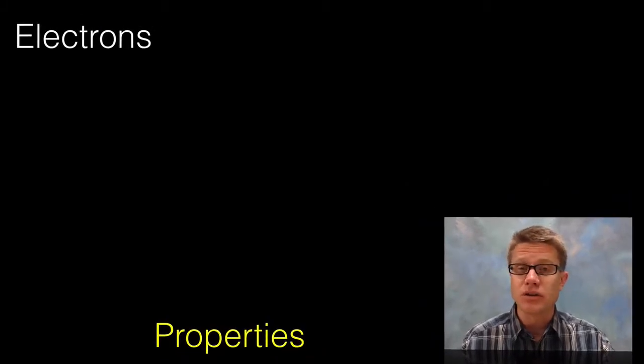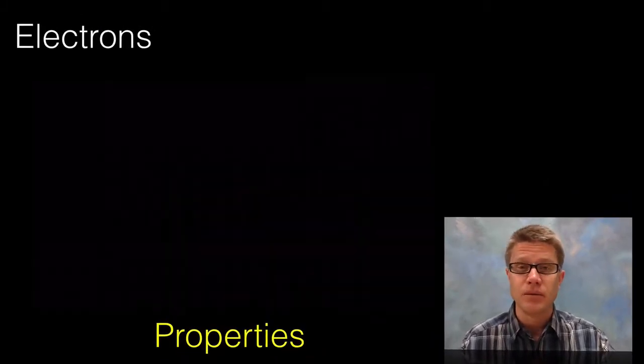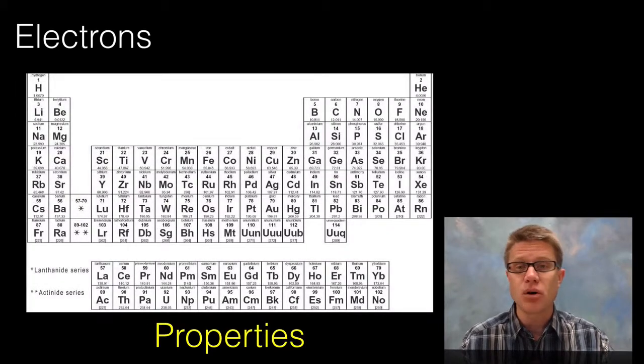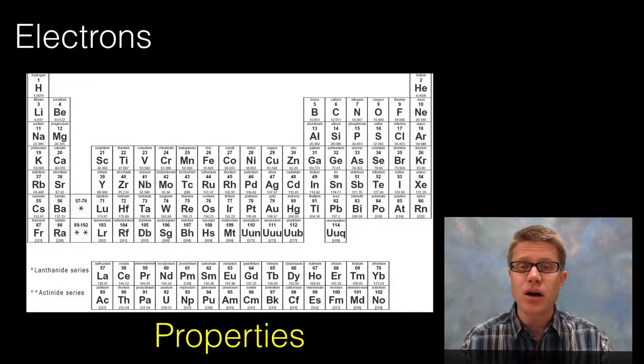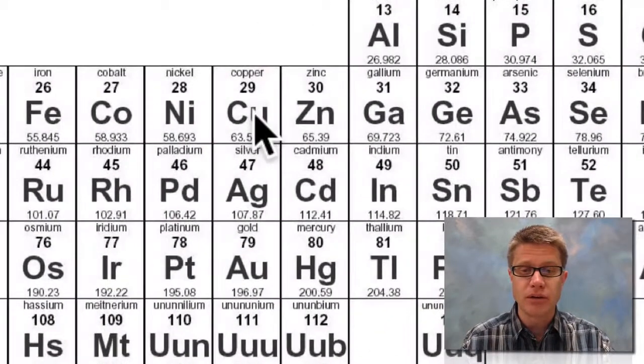And the number of electrons that we have out there tell us a lot about the properties of the atom. And so if you look at the periodic table, this whole thing is essentially built on the number of electrons that we have. Because that tells us a lot about the properties.